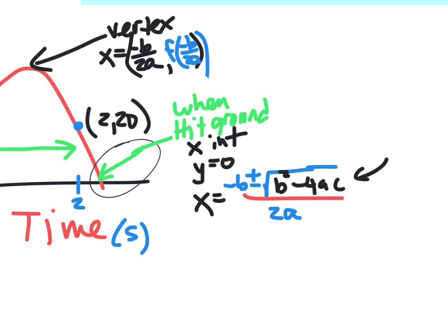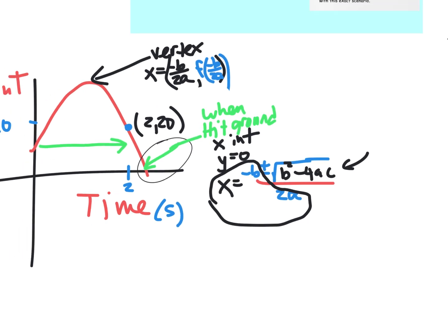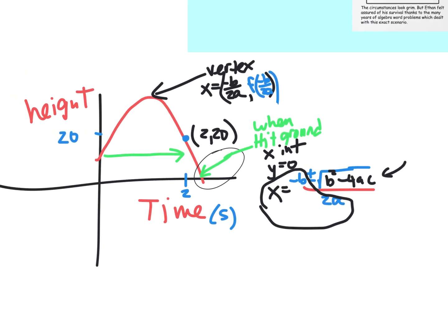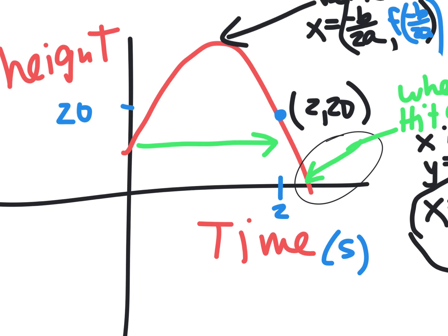Another reminder: -b/2a is also the formula for the x-coordinate of the vertex, or the axis of symmetry.